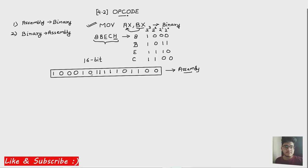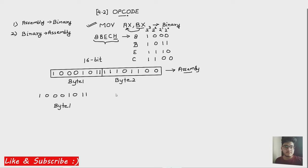So counting: three, four, five, six, seven, eight — this is byte one. And this one is going to be byte two. So we are going to analyze this instruction in two different bytes. Byte one contains 10001011. And byte two contains 11101100. These are the two bytes which we are going to study separately from the 16-bit instruction format, which we studied in tutorial 4.1.